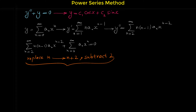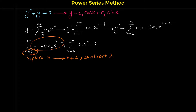This technique is called the shifting of the index of summation, which is very important in solving differential equations with the power series method. In this technique, whatever operation we perform on n, we do the opposite to the starting point. Here we add 2 to n by replacing n with n plus 2, so we subtract 2 units from the starting point.